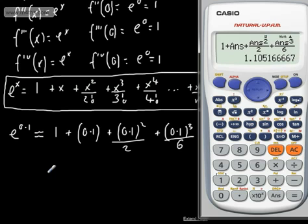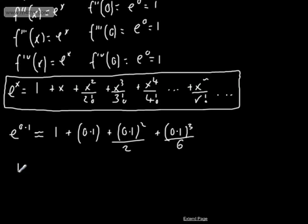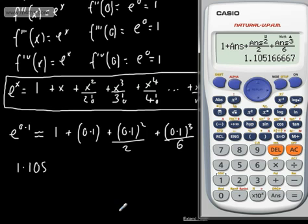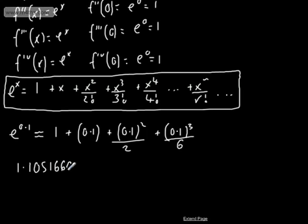And that gives us, what does that give us? 1.105166667. So that's the approximation using the Taylor expansion. You might hear Taylor series, Taylor expansion, sorry, the Maclaurin series or expansion. You might hear those words interchange. Essentially they're the same thing, for all intents and purposes.